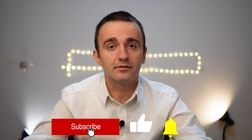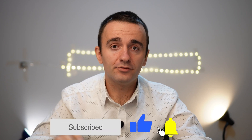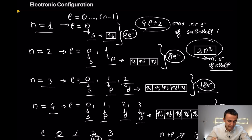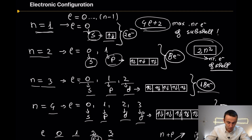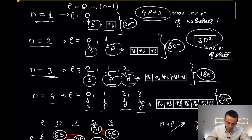Before I move to an example in electronic configuration, it's important to know some basics about quantum numbers. n=1 contains s orbitals. n=2 contains s and p orbitals. n=3 contains s, p, and d orbitals. And n=4 contains s, p, d, and f orbitals.